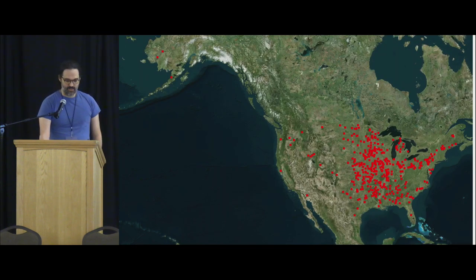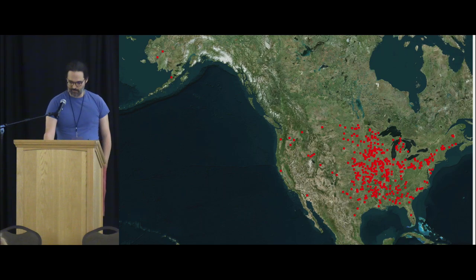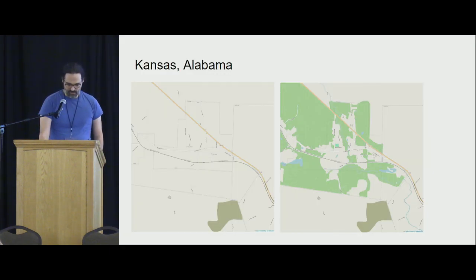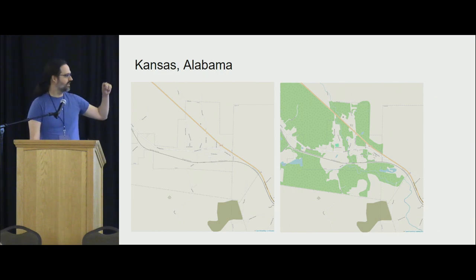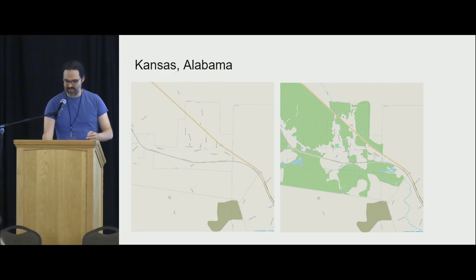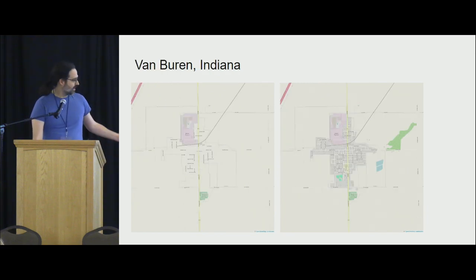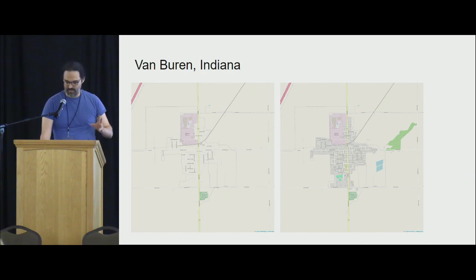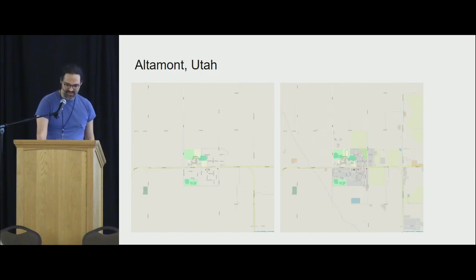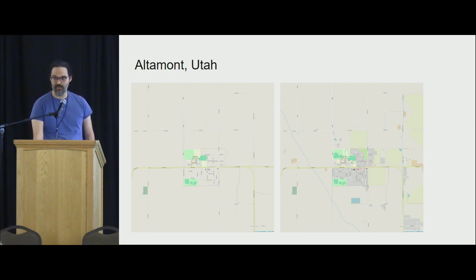It has posted about 400 of these now. Here's every place in the United States that it has posted. Let's take a look at a few of them. This is Kansas, Alabama — I love all of these that are state comma state. There's a lot of small towns of this shape apparently. Some folks go in and add lovely land cover, as you can see. You get a lot of folks adding buildings or things like that. The amount of mapping varies from day to day, but a lot of times people do get some stuff. Here's another one in Utah.